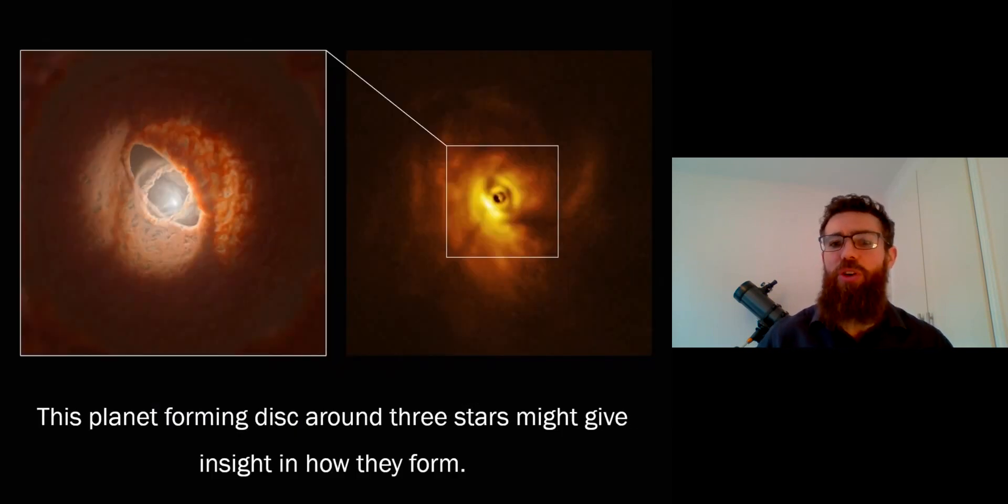I suppose the more curious thing actually about finding planets orbiting these multiple star systems is where did they come from? Did they form there?